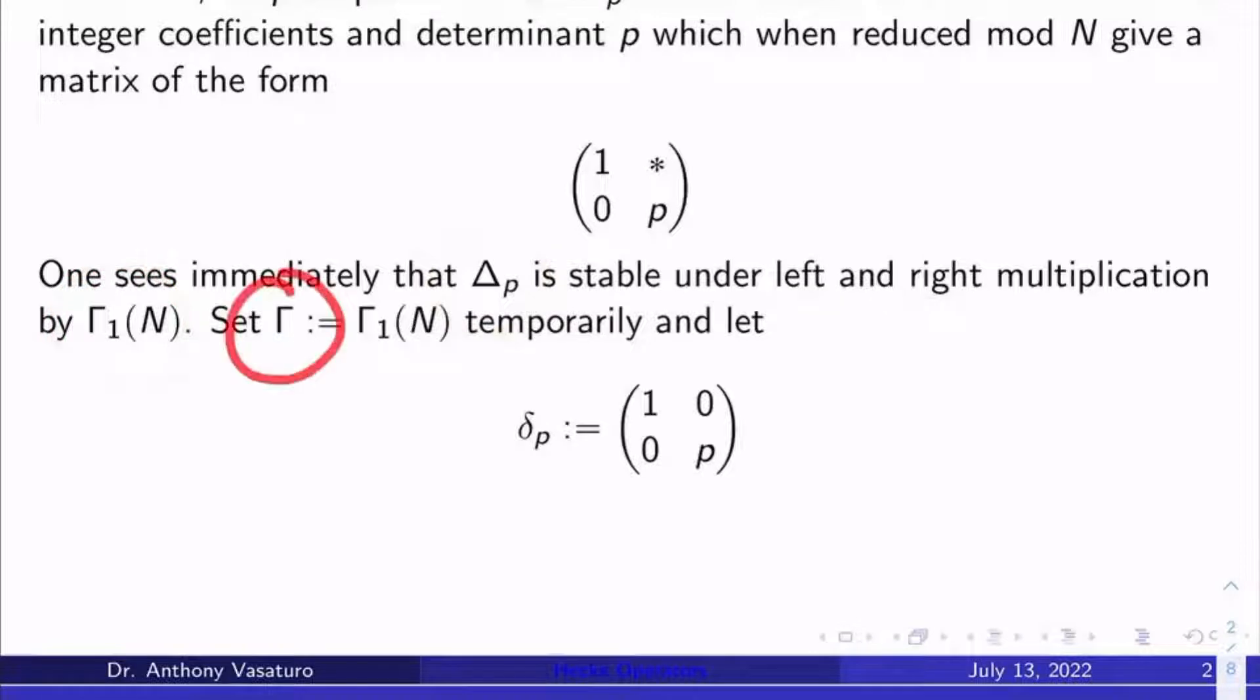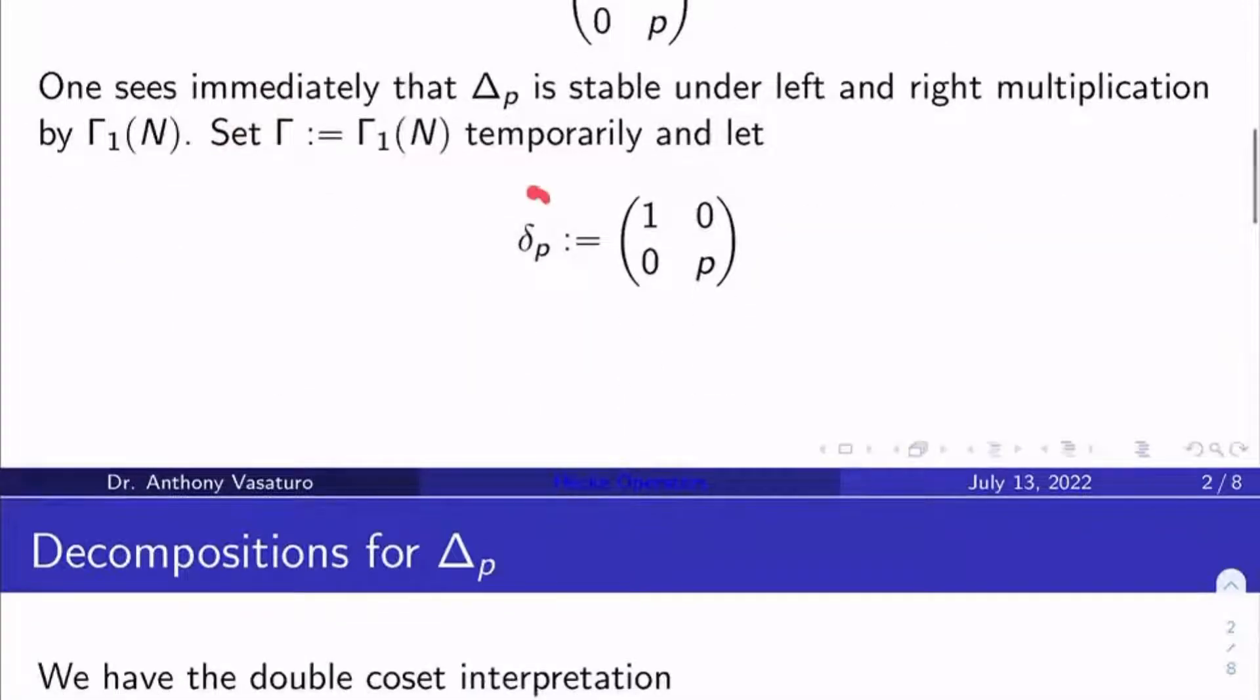Let's set gamma equal to gamma sub 1 of n just temporarily, and let's let delta sub p be the matrix 1, 0, 0, p. So we want that matrix with that lower right entry p.